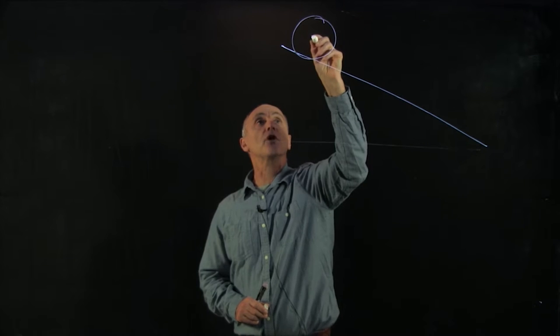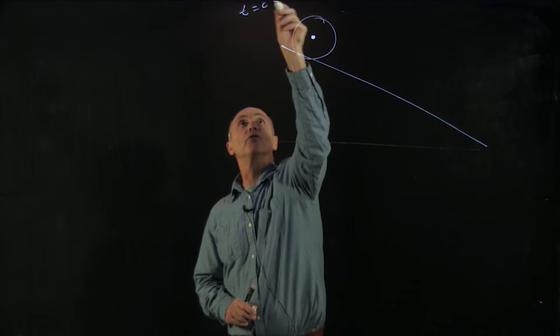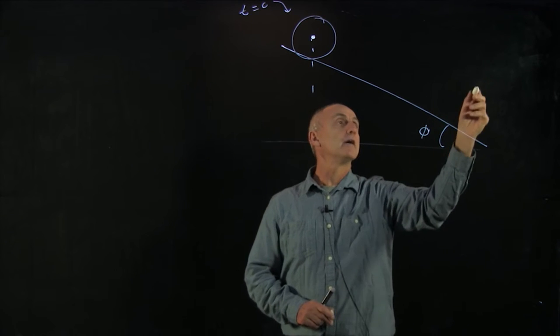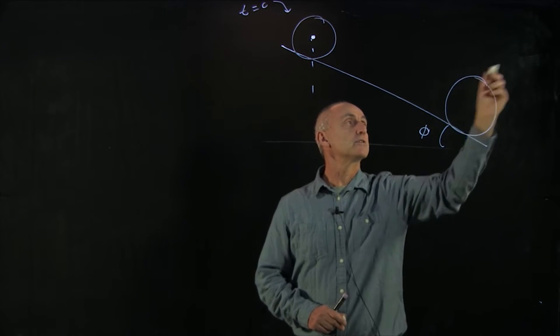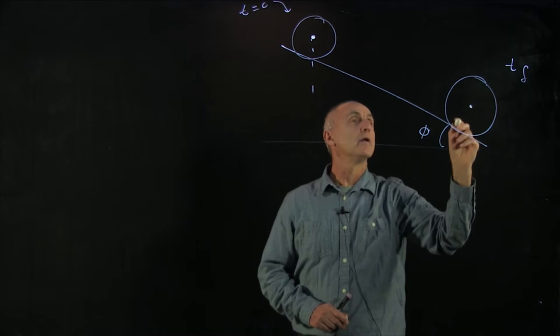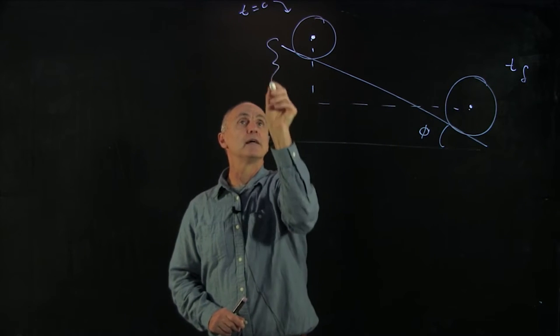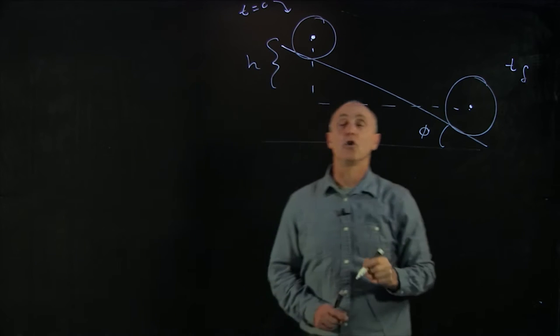Here is the wheel that starts at t equals 0. And this is an angle phi. And at some later time t final, the wheel has dropped a distance h along the inclined plane.